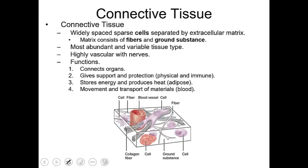In connective tissue, the cells are widely spread apart. The substance present between the cells is called the ground substance. There are cells here, here, and here — they're sparse, so you don't see cell junctions between them. The white space between the cells is filled with a gelatinous fluid in most cases, and can be liquefied or calcified. The ground substance is vascular, meaning it is richly supplied with blood vessels, and can transport oxygen and carbon dioxide, as well as nerves and nerve endings.